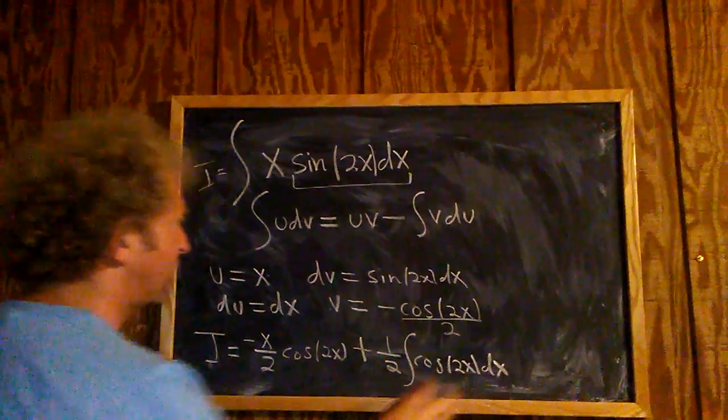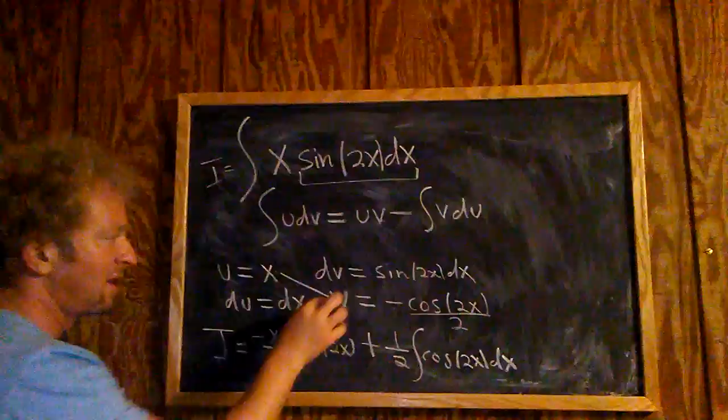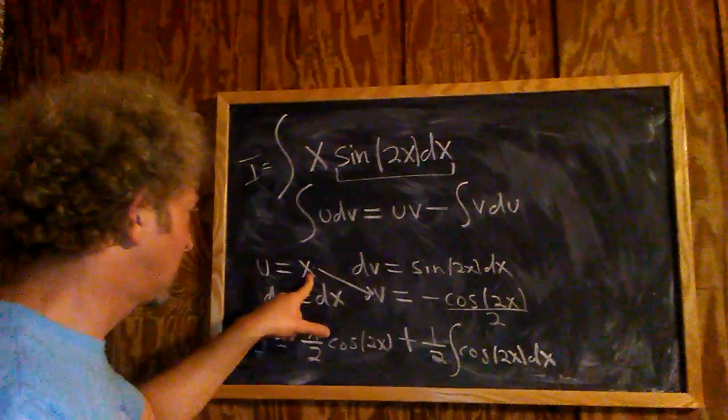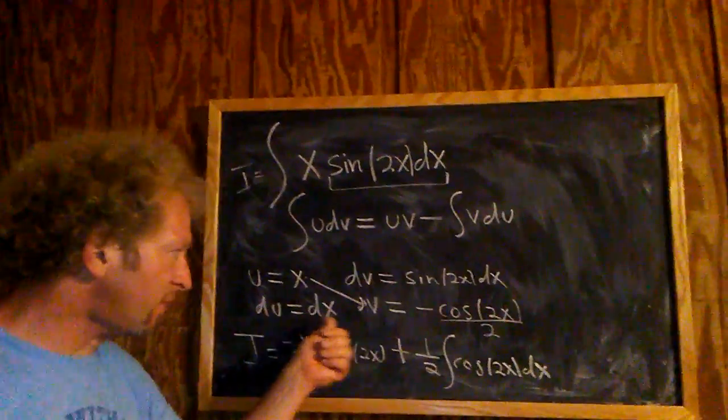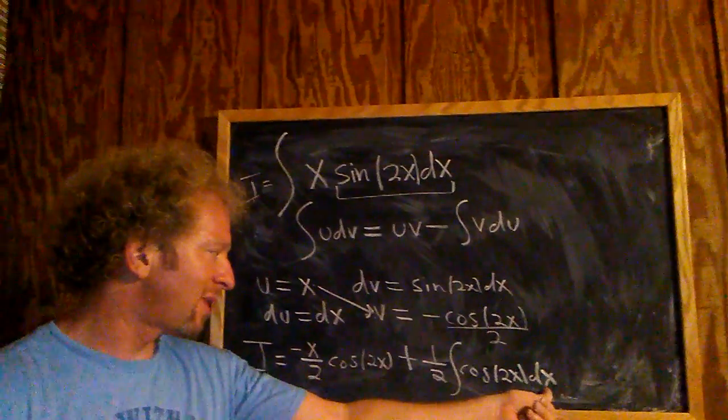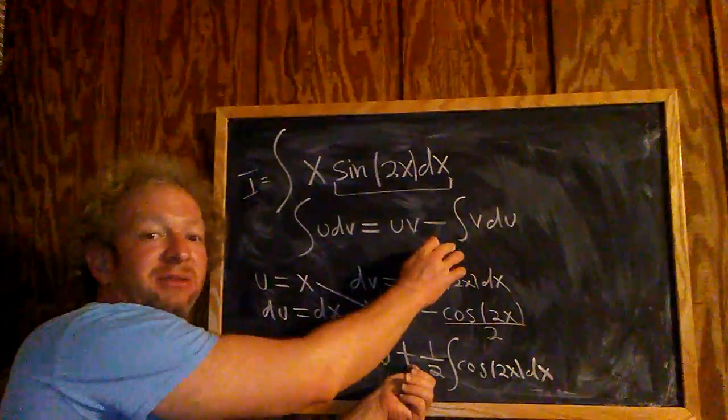I'm going to go over that again because it's a little bit confusing. So we have UV, so that's this times this, that goes here. So it's this times this, it goes here, minus V dU. So the dx is just dx, that's dU, it's just dx. This negative one-half comes out, and it becomes a positive one-half.